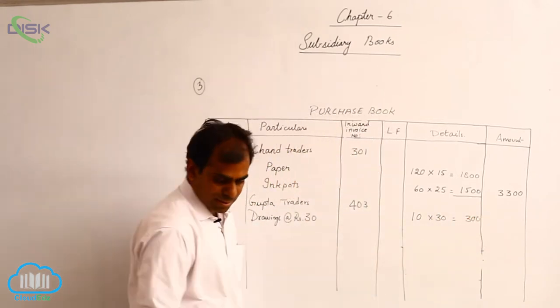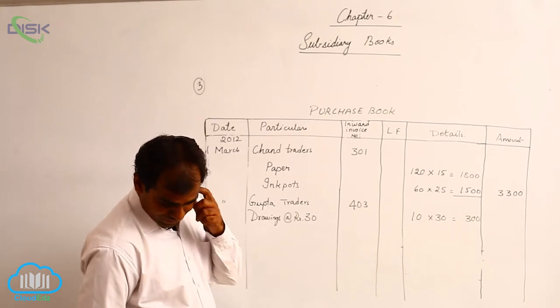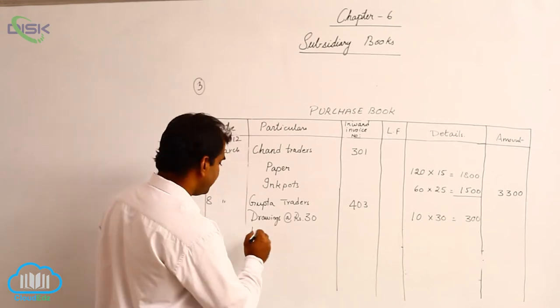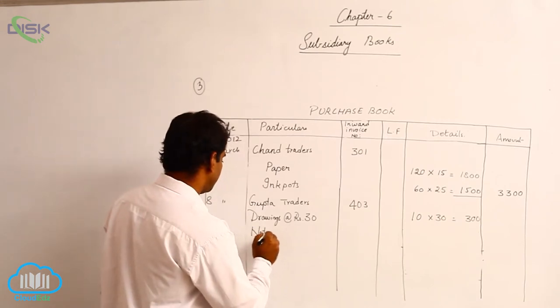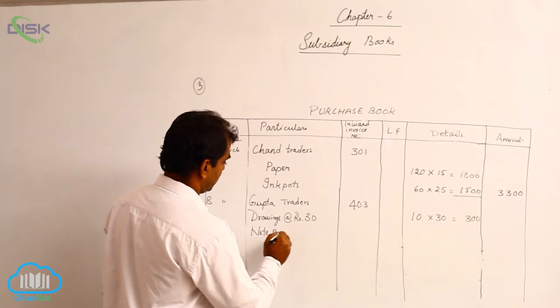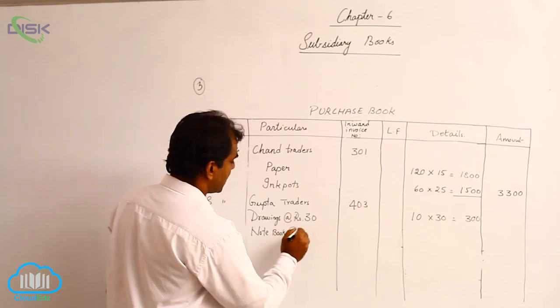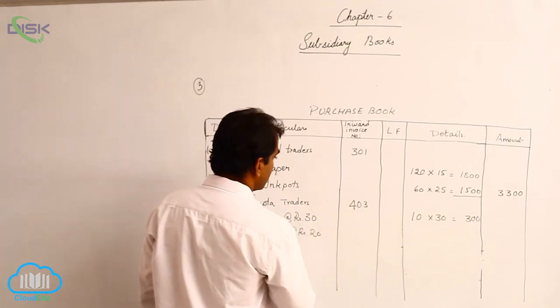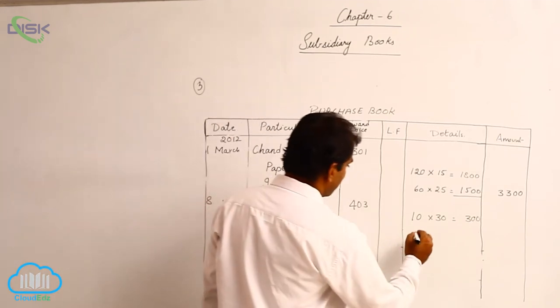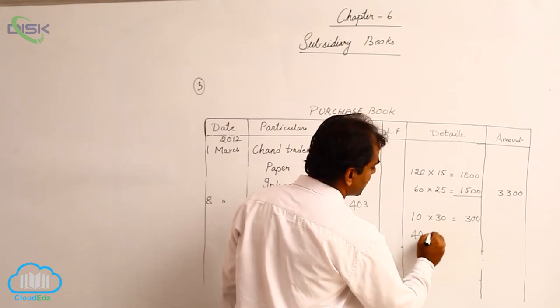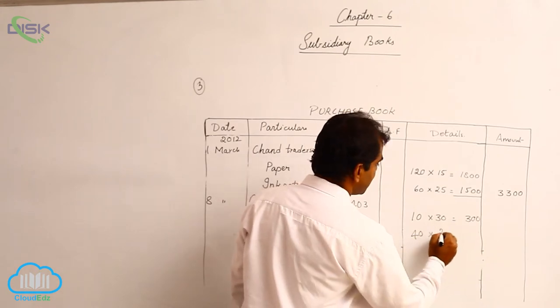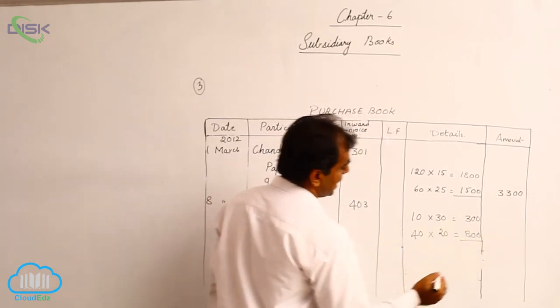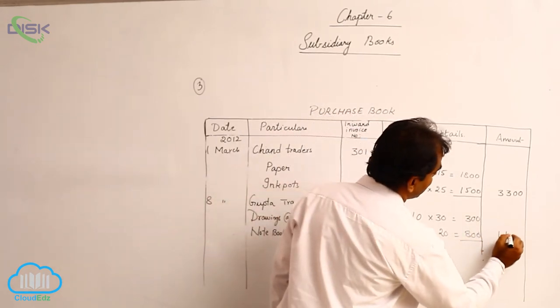Now next, you are also buying notebooks at the rate of 20 each. So in the details column you can mention you are buying 40 notebooks at the rate 20, making it 800. So total credit purchases on this date become 1100.